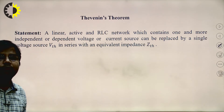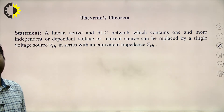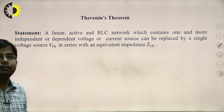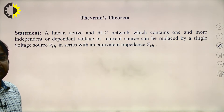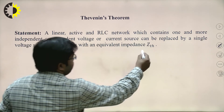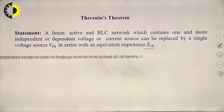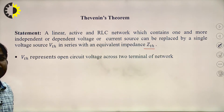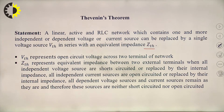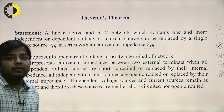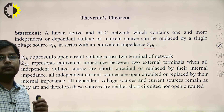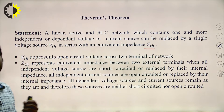A linear active RLC network which contains one or more independent or dependent voltage or current sources can be replaced by a single voltage source V_TH in series with an equivalent impedance Z_TH. V_TH represents the open circuit voltage across the two terminals of the network. Z_TH represents the equivalent impedance between two terminals when all independent sources are replaced by their internal resistance.